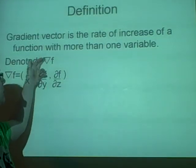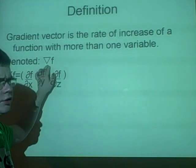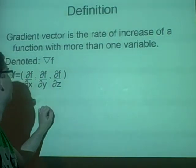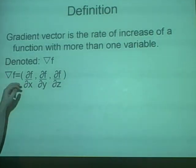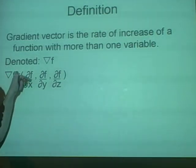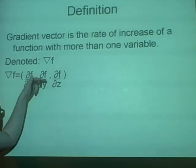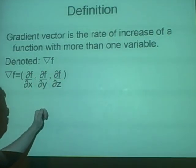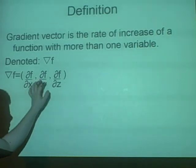And it's denoted as this upside down triangle, which is called nabla. Nabla f, so it's usually referred to as grad f. And we work this out as partial derivative of x, partial derivative of y, partial derivative of z, and it's laid out like a vector.